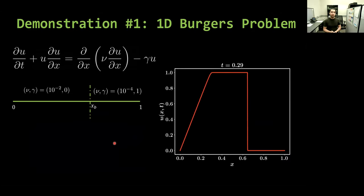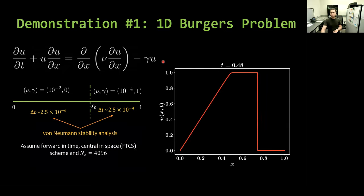Our first demonstration is the 1D Burgers problem. Here we have an extra friction term to make it more interesting. We consider two sections of the domain with different physical properties. If we consider a central in space finite difference scheme with Nx equal to 4096, we find that the left part will require delta T of about 2.5 times 10 to minus 6. With the same analysis, we find that 100 times larger delta T will be sufficient for the right part. If we consider the naive approach of a unique solver everywhere, we will have to follow the smaller delta T. Instead, we will use a reduced-order model for the left part to provide interface boundary condition here. So we can use full-order model on the right part with larger delta T to reduce the computational cost.